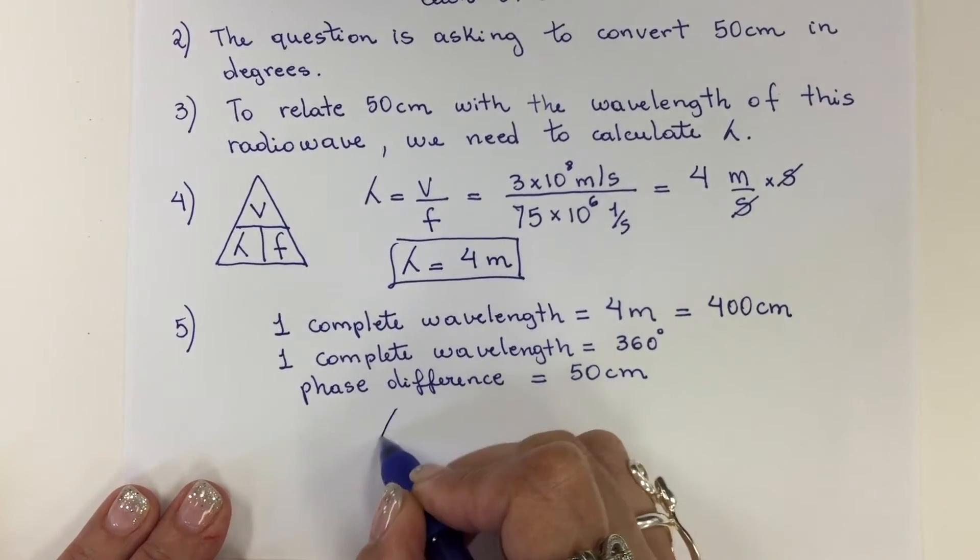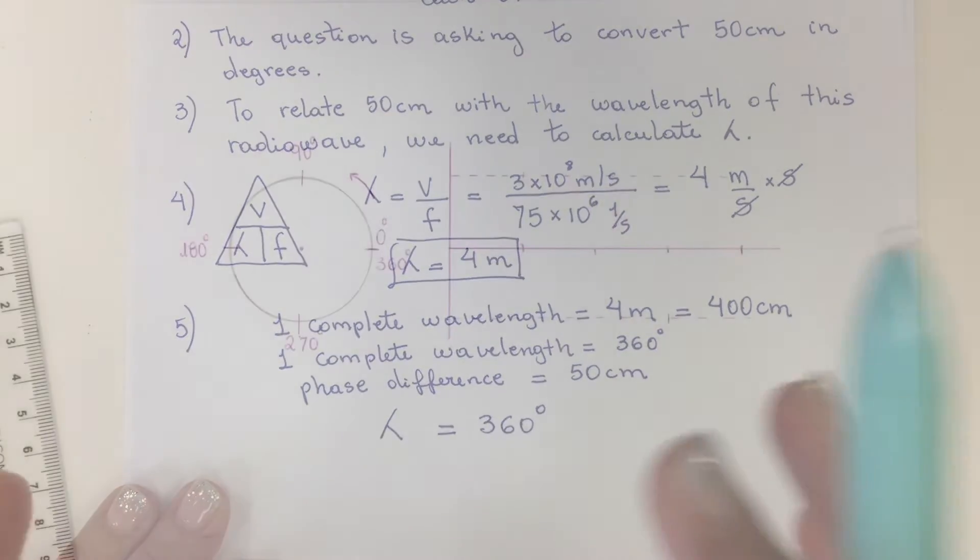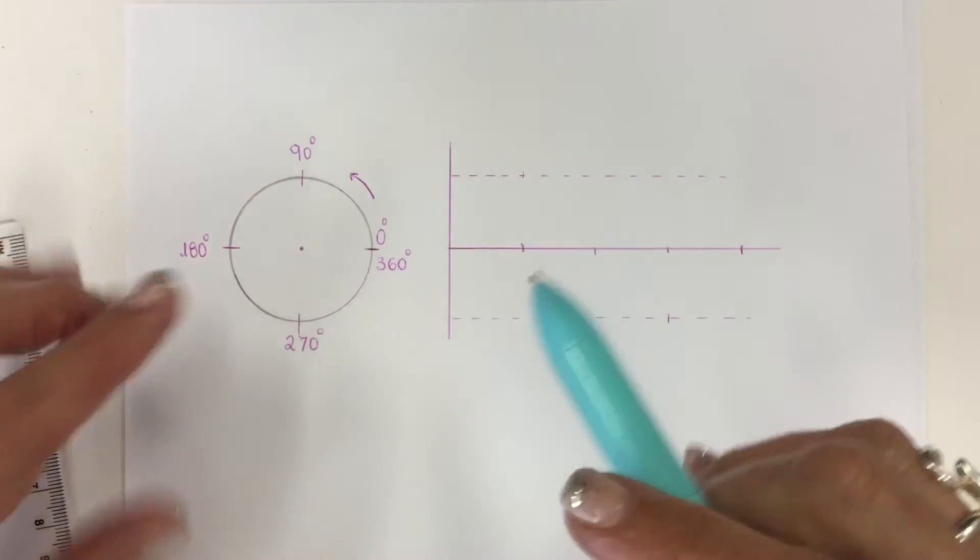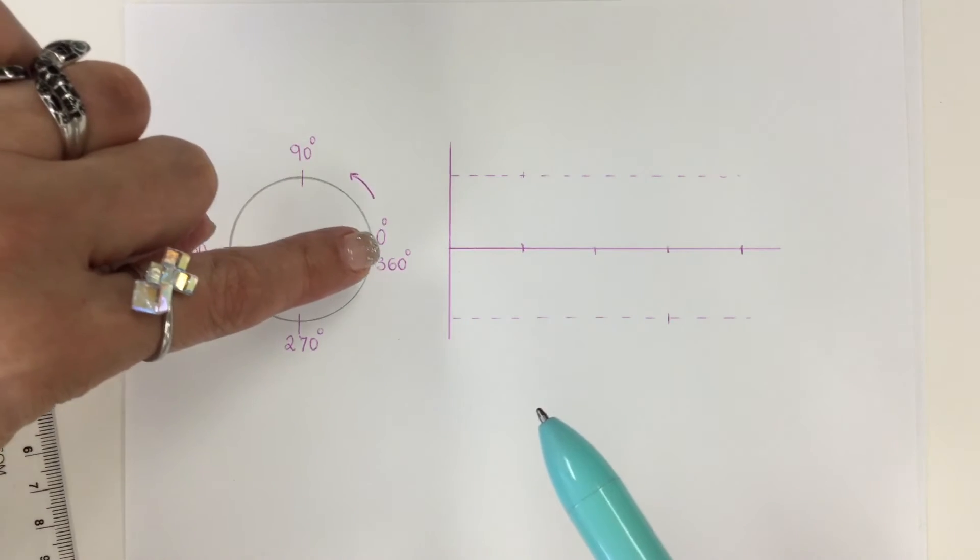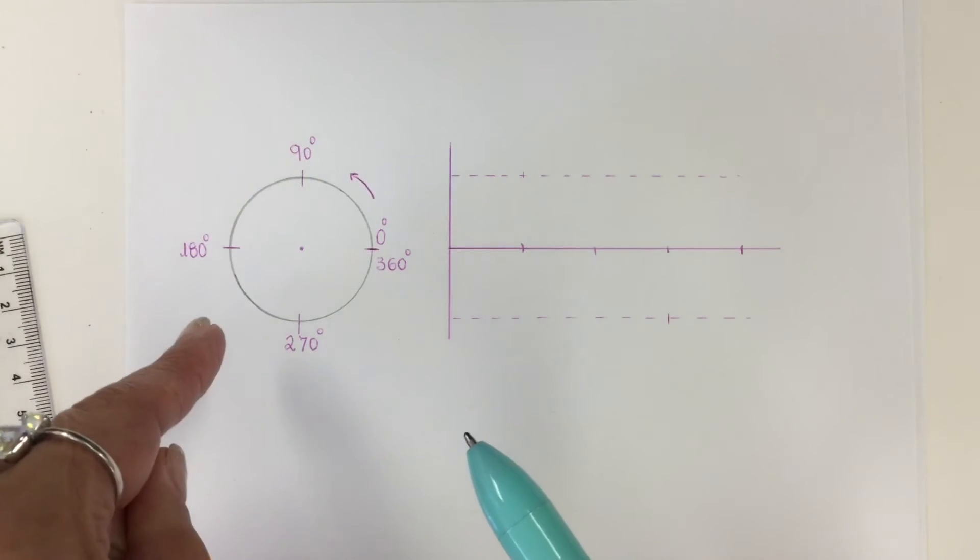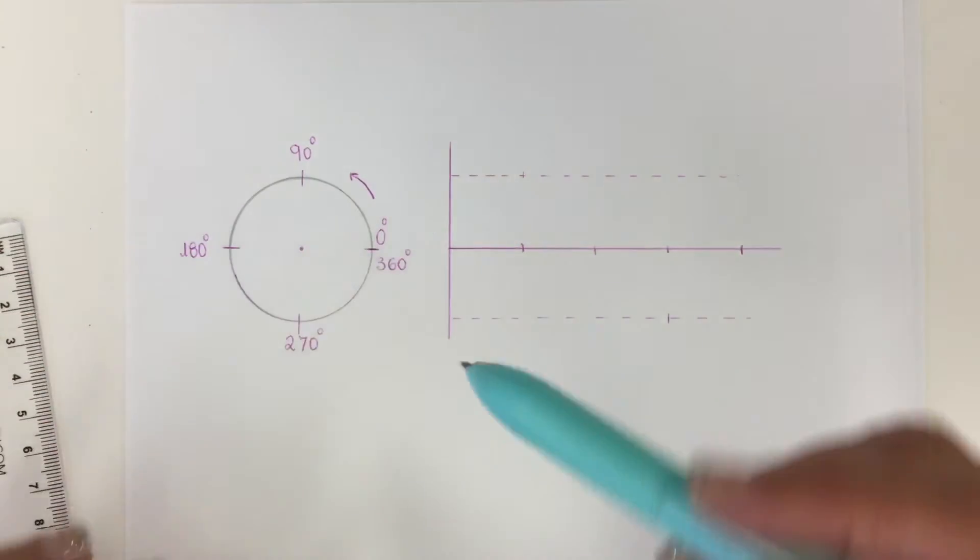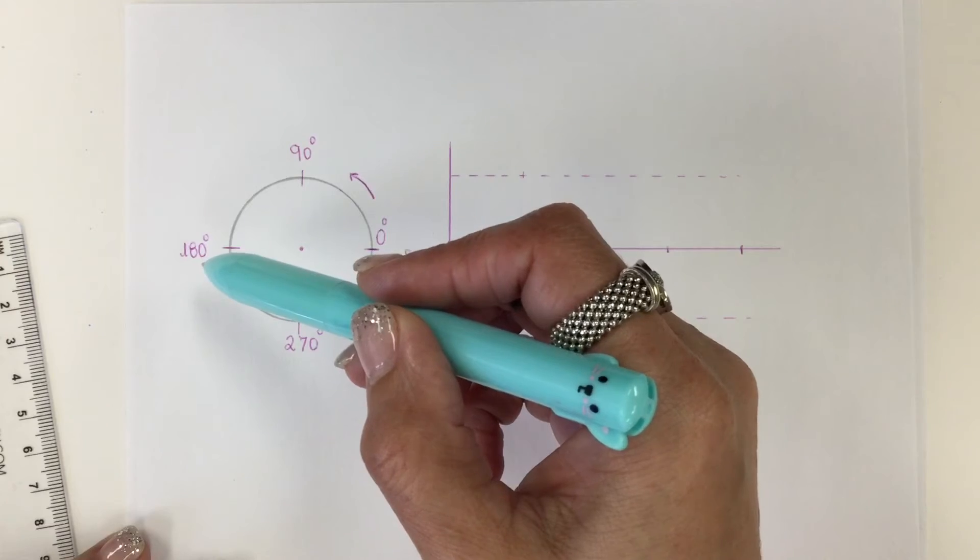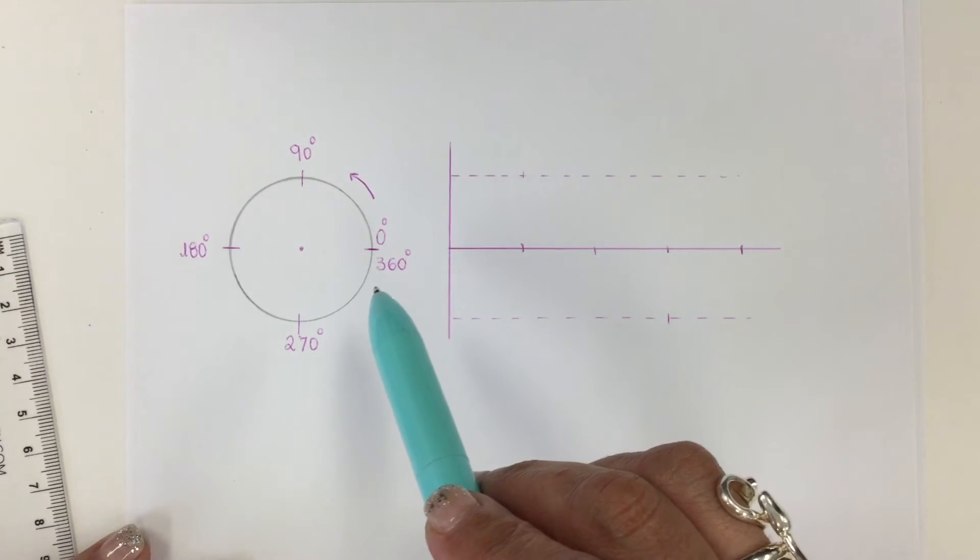One complete wavelength corresponds to 360 degrees. To relate a wave with angles, I'm going to use this circle here and walk counterclockwise with the angles, starting from 0 degrees, then to 90 degrees, 180 degrees, 270 degrees, and 360 degrees.